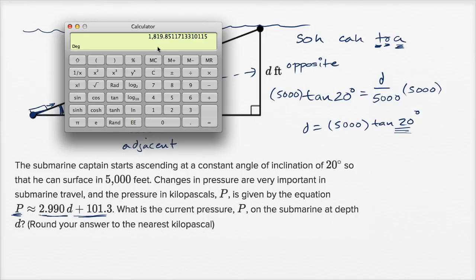If I want to take our D, this is our D, multiply it by 2.990. So let's multiply it by 2.99, I can store a zero there, it's not going to change the value, equals that. And then add 101.3. So plus 101.3 equals 5,542.65500.